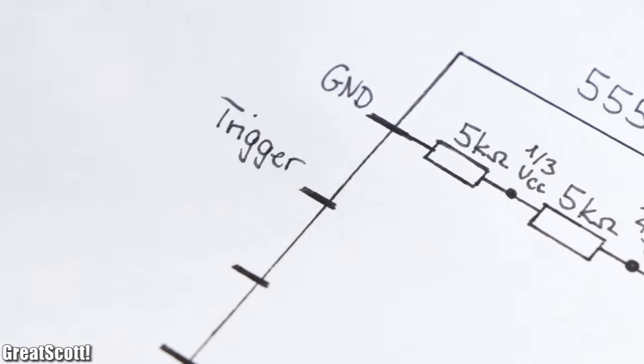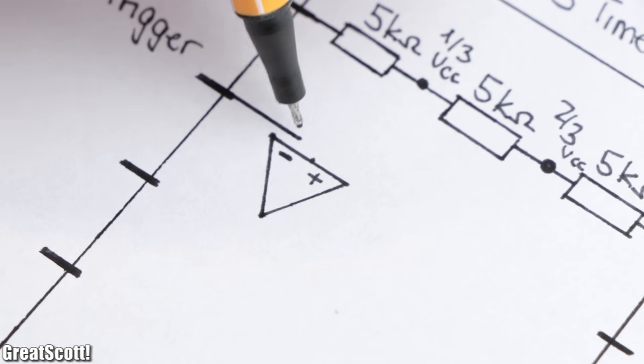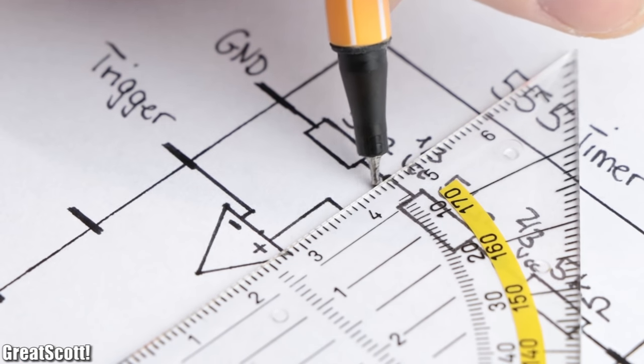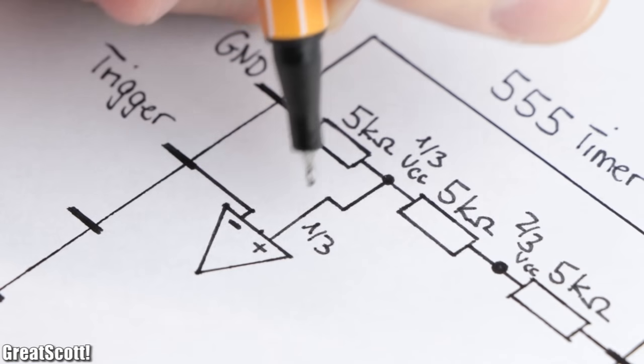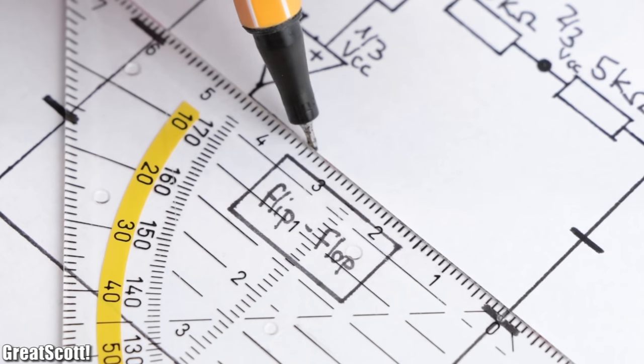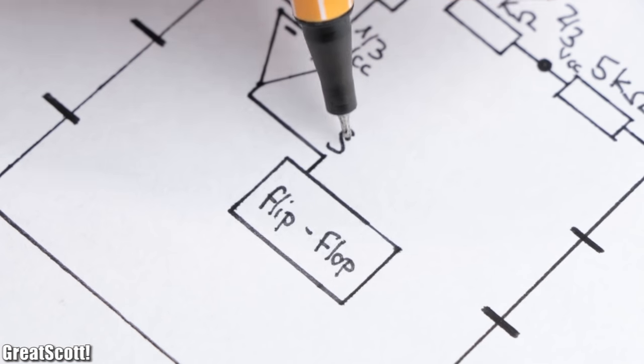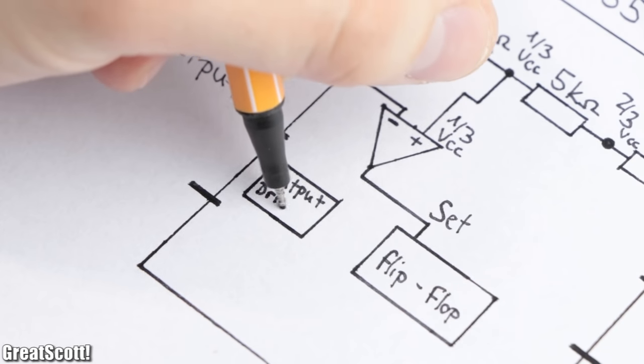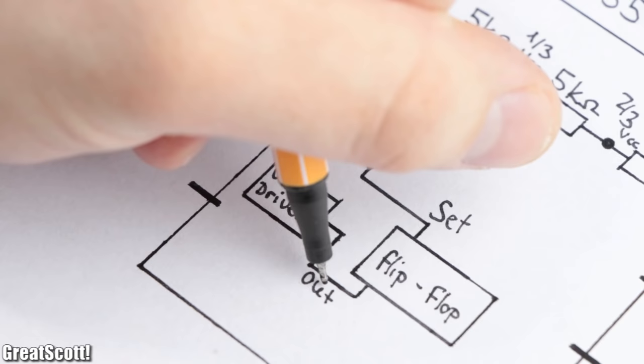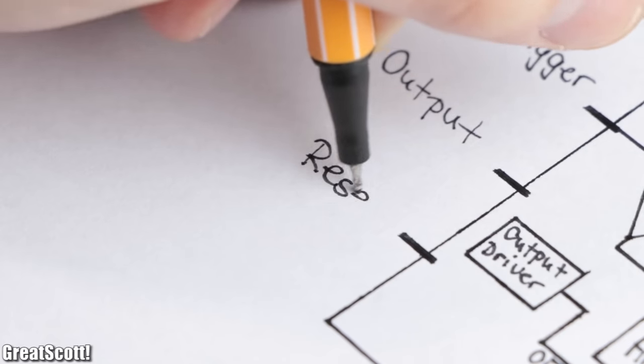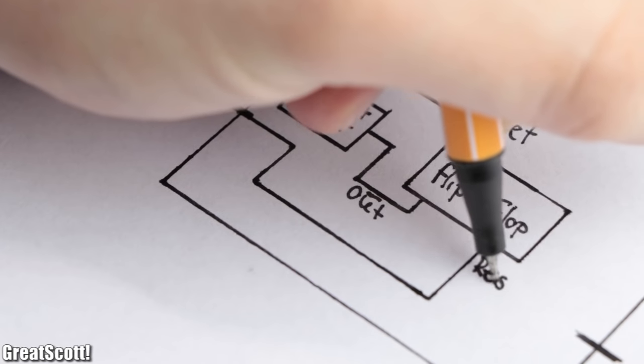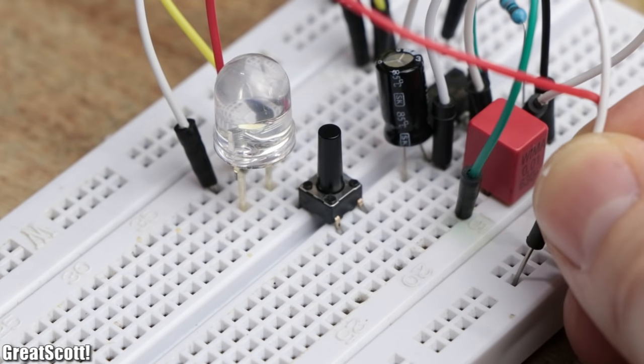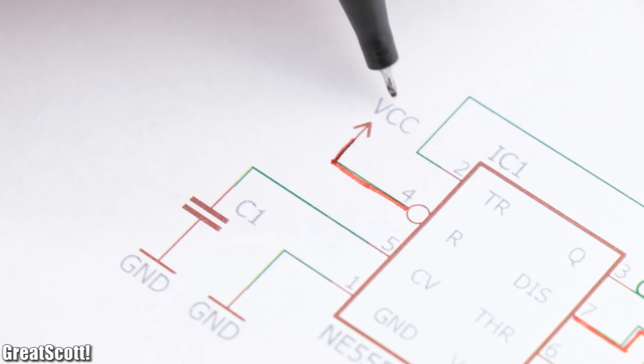Pin 2 is the trigger pin which directly connects to the negative input of a comparator. The positive input of this comparator connects to the voltage divider which has a potential of one third of the supply voltage at this point, and the output of the comparator is connected to the set pin of the integrated flip-flop. Pin 3 is the output which is connected to an output driver and subsequently to the output of the flip-flop. Pin 4 is the reset pin which directly connects to the reset pin of the flip-flop and can by connecting it to ground reset the flip-flop instantly. That is why they are usually tied to the supply voltage.